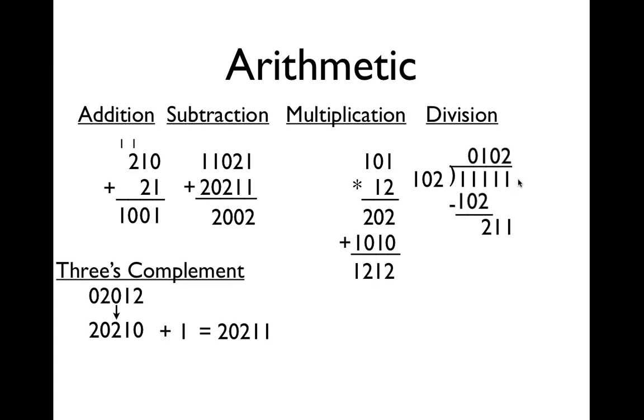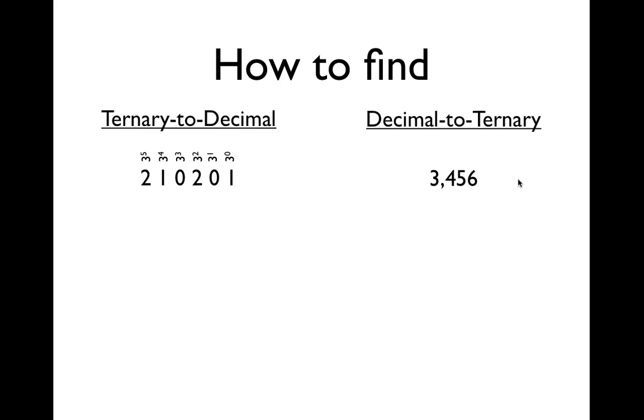But 102 can go into 211, and it can go to it twice. So 102 times 2 is also 211, and again, subtraction, and it gets you a 0, which means your final answer would be 102.